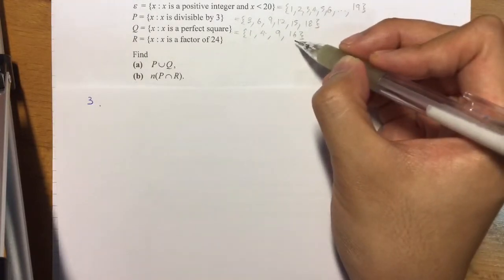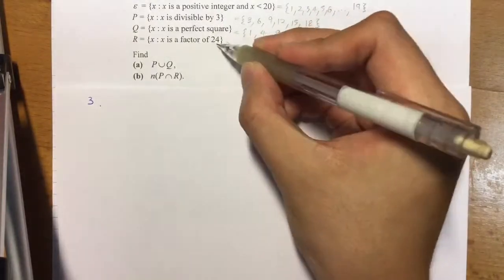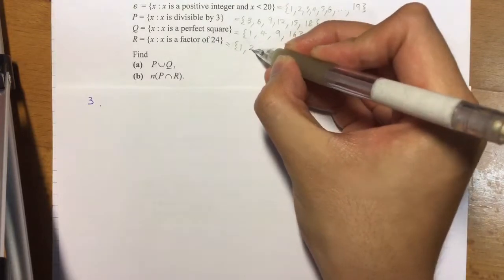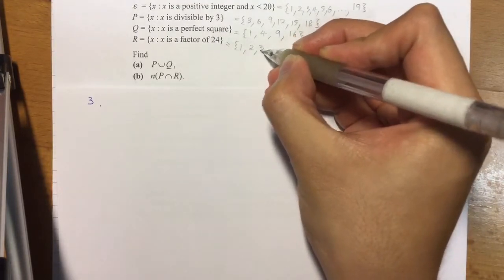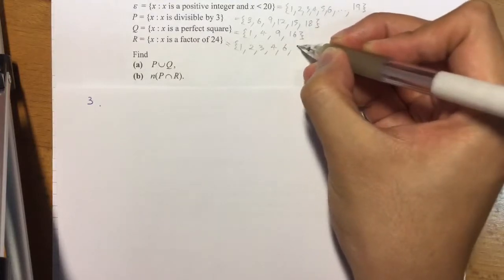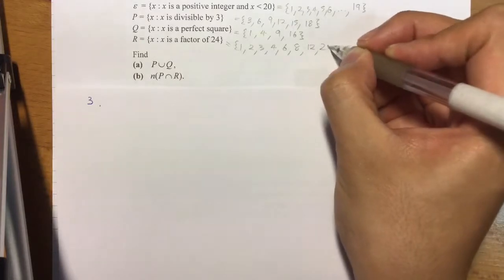Last but not least, we have R, factors of 24. So we have 1, we have 2, we have 3, we have 4, 6, 8, 12, and 24.